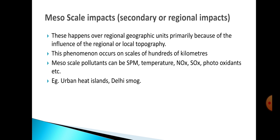Meso scale impact is also called secondary or regional impacts. These happen over regional geographical units because of the influence of a particular region, locality, or topography. It occurs on scales of hundreds of kilometers. Pollutants at this scale can be temperature, oxides of nitrogen, oxides of sulfur, photo-oxidants, and particulate matter. Examples include urban heat islands and the Delhi smog.